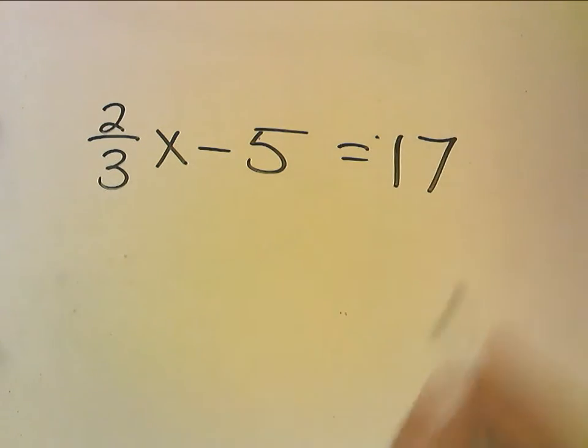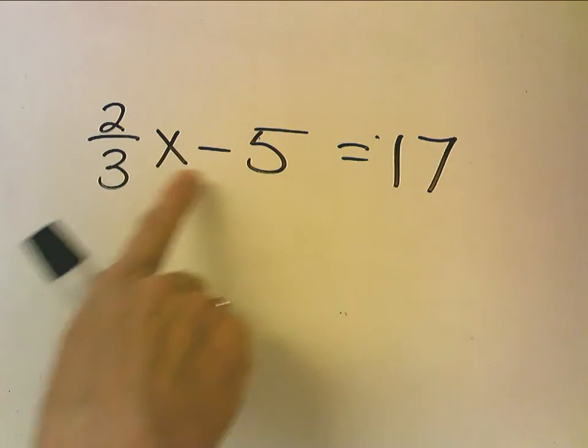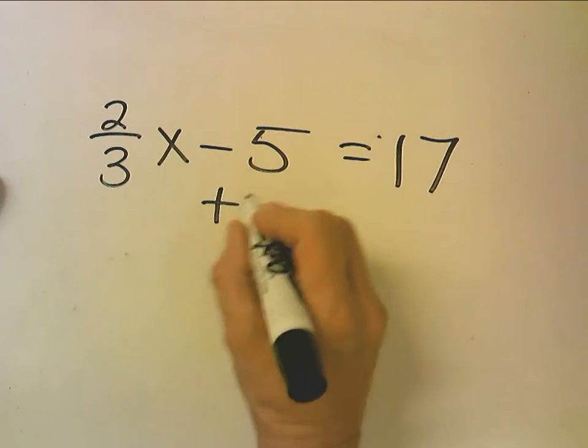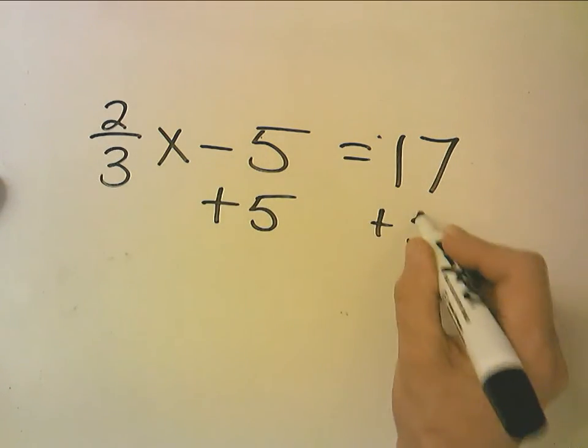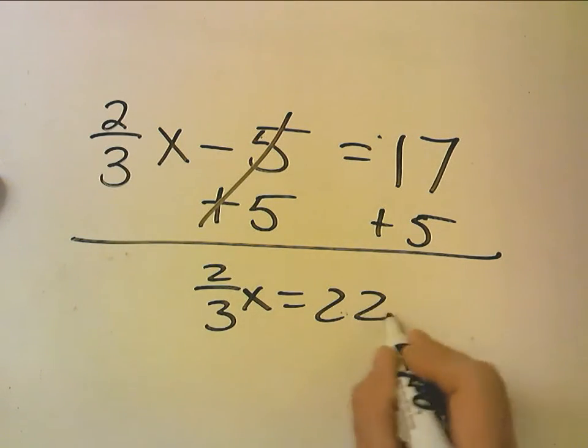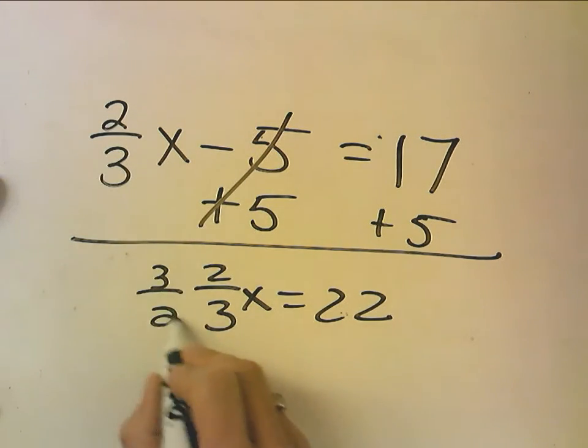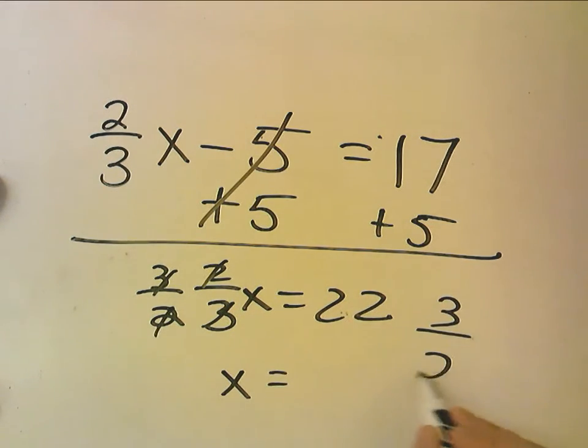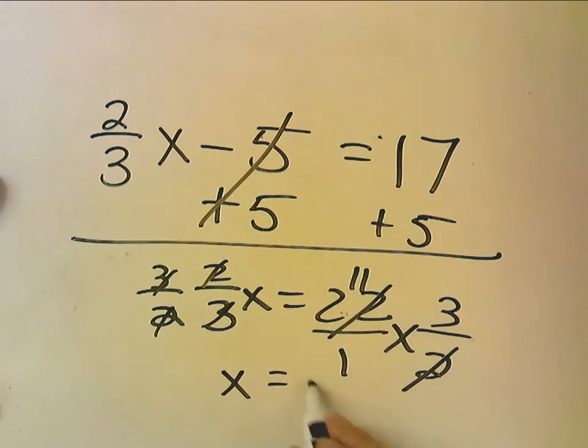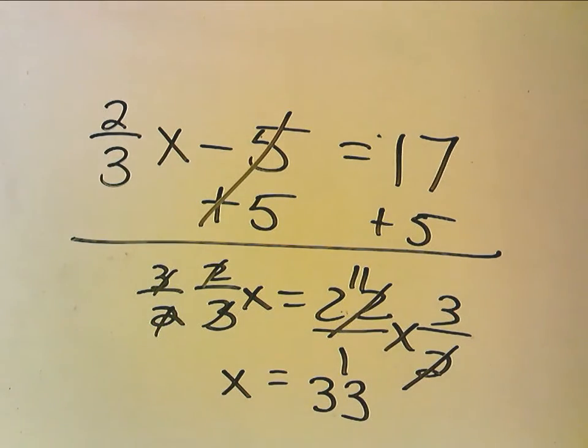And then start it again when you're done. Two operations are going on, multiplication and subtraction. I'm going to undo subtraction first because of SADMEP, so I'm going to add 5 first, and I get 2 thirds x equals 22. I'm going to multiply by the inverse, because these all cancel out. If I multiply this side, I have to multiply this side. Now I can apply the cross-simplification rule, the superpower, because that becomes 11 and x equals 33.